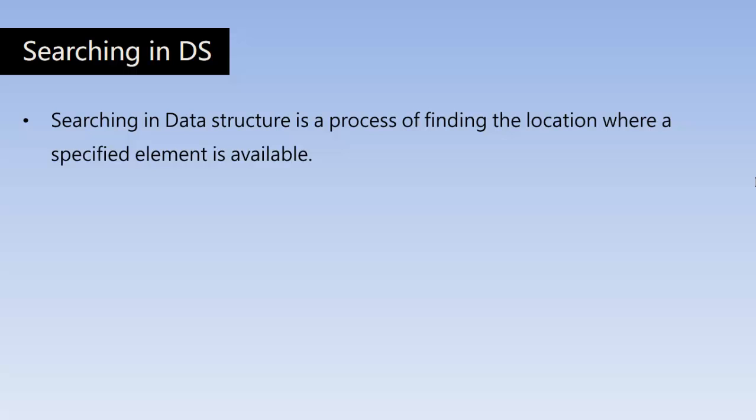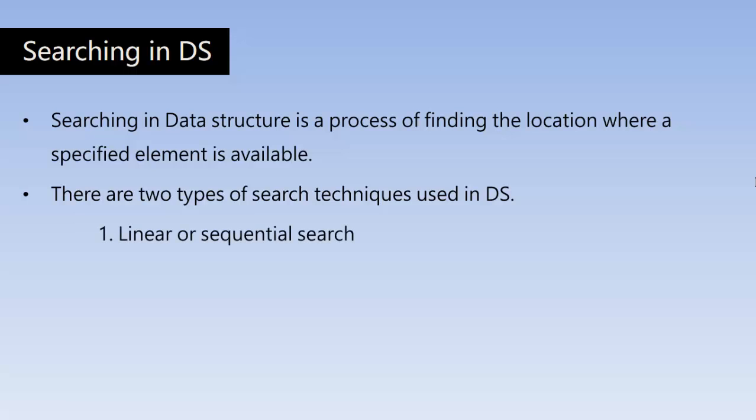So there are two kinds of search techniques available in data structure. One is linear or sequential search where we start our searching process with the beginning element of the list and we go on visiting all the locations in the list until the desired element is found. Another one is binary search which will be covered in the next video.